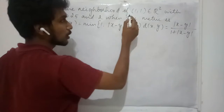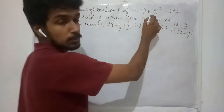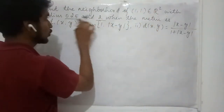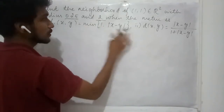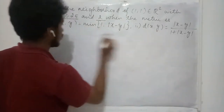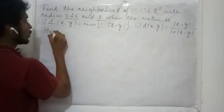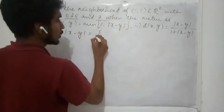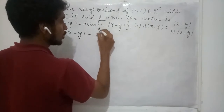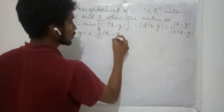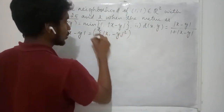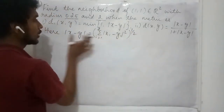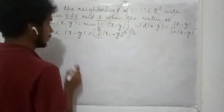We are asked to find out the neighborhood of this point in R² with two different radii, that is 0.25 and 2, when the metric is defined in these two different forms. Here, |x − y| denotes the summation from i=1 to 2 of (xᵢ − yᵢ)² to the whole power 1/2. This is what the absolute of x minus y means.